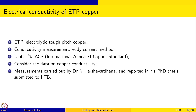The units of conductivity are given in percentage IACS — IACS stands for International Annealed Copper Standard. With respect to this standard, what is the conductivity measured in the sample is what is given in these conductivity measurements. We are going to consider data on ETP copper conductivity, and these measurements were carried out by Dr. N. Harshawardhina, reported in his PhD thesis submitted to IIT Bombay.